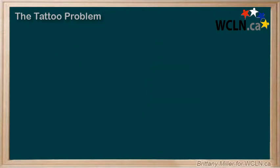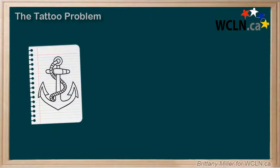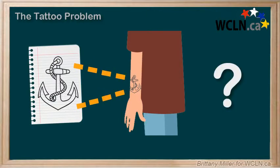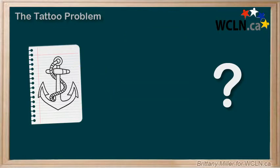In fact, he has a tattoo of one of his son's drawings on his other arm, and he wants his new tattoo to be shrunk down by the same amount that his son's drawing was shrunk by. That's a little confusing, but certainly not the strangest request you've ever got.